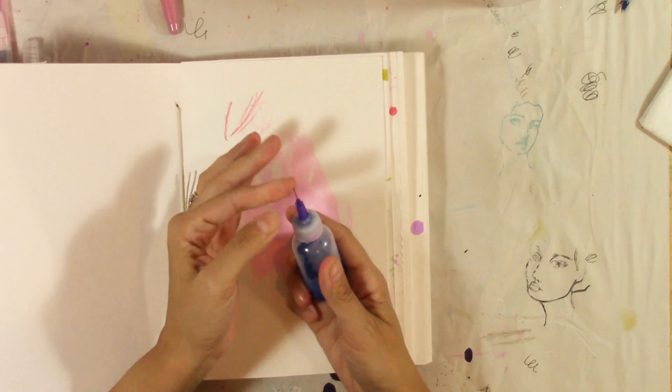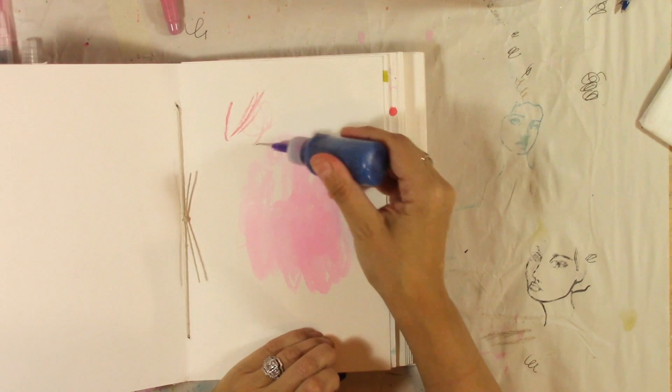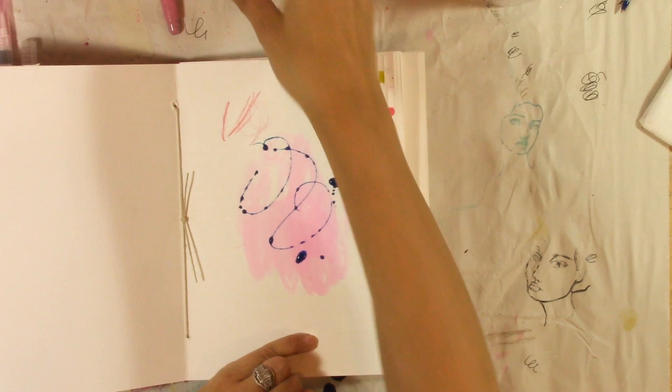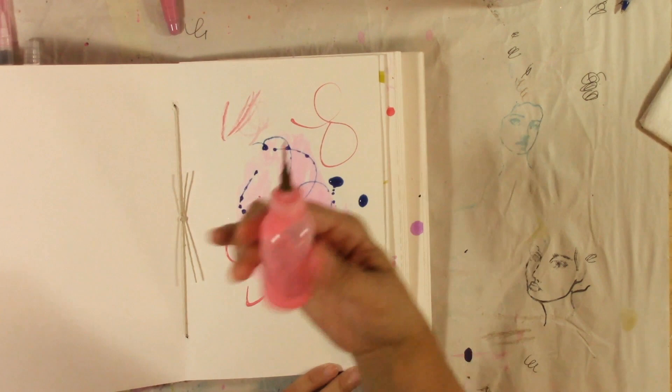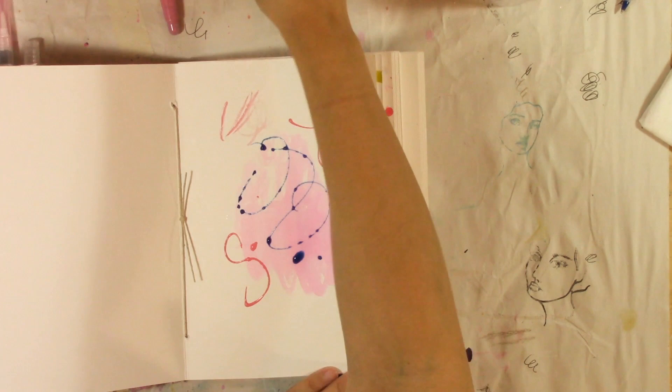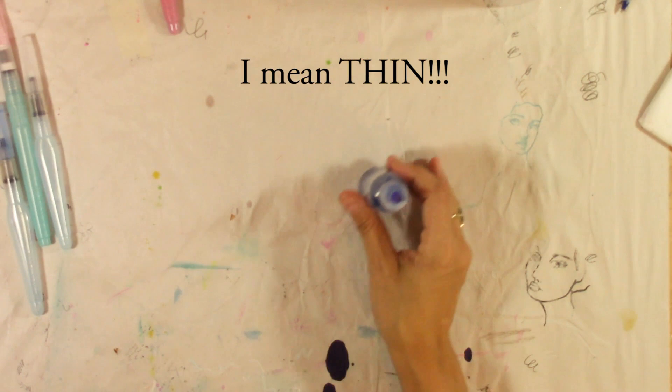You want to make sure this end is on there pretty good. So what you're looking for is a nice even kind of line and not really blobby like that, so I need to thicken it up. So this is what you're looking for, this is a good consistency. I would say it's thicker than like an inky consistency. This is probably way too thick.